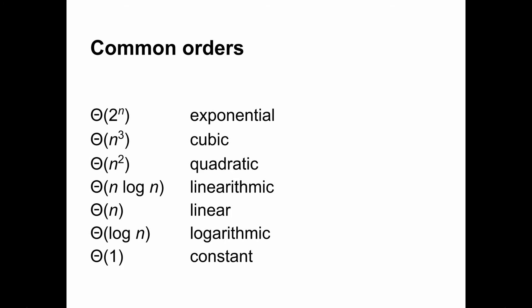There are many orders, but these are the ones we'll encounter most often. Among these, the fastest growing order is exponential. Since exponential functions are the fastest growing functions, algorithms with exponential running time are the slowest. Their running time quickly becomes huge. The slowest growing order is constant. Algorithms with constant running time always take the same amount of time, regardless of the size of their input.